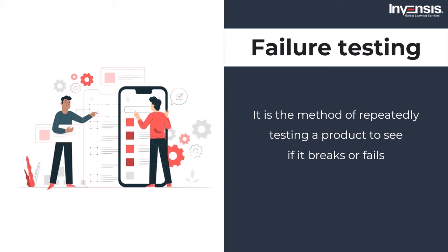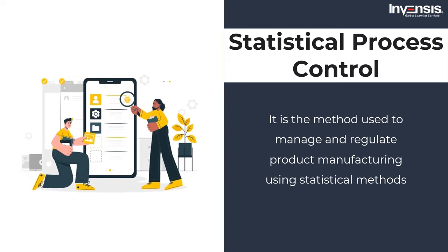Failure testing for software products may entail putting the software under high usage or load situations. The second is statistical process control, which is a methodology created by Walter Shewhart at Western Electric Company and Bell Telephone Laboratories in the 1920s and 1930s. It is based on using statistical techniques to control a process or production method. This methodology can help monitor the process behavior, then discover any problems and issues in internal systems, and find the necessary solutions for production issues.